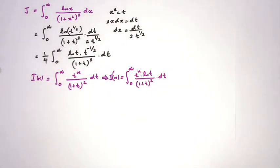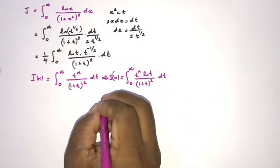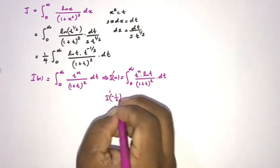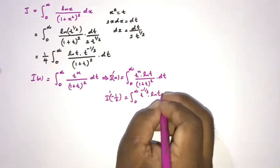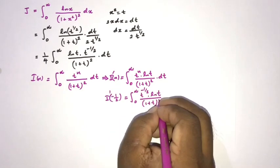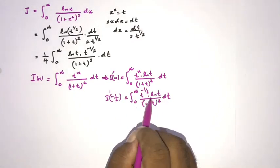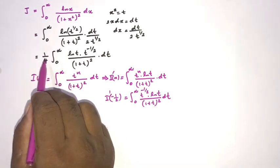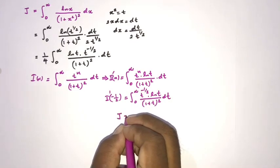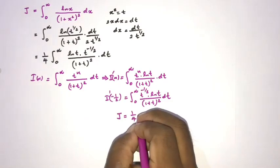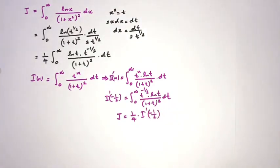Plugging in n equals minus one half, we get I'(-1/2) equals the integral from 0 to infinity of t to the minus one half times ln(t) over (1 plus t) squared dt. This is exactly our integral, so J equals 1 over 4 times I'(-1/2). Now we need to find I'(-1/2).